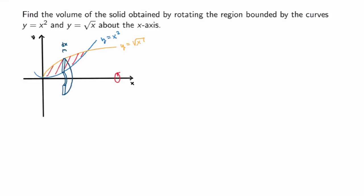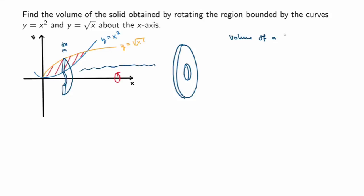More precisely, the typical slice I get looks like a washer. So we call this method the disk-washer method for calculating volumes of solids of revolution. In the next lecture we'll see a different method involving cylindrical shells. For now, let's stick with the washer method and calculate the volume of a typical slice.